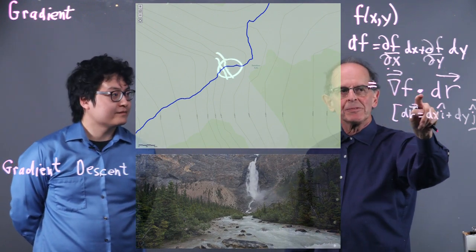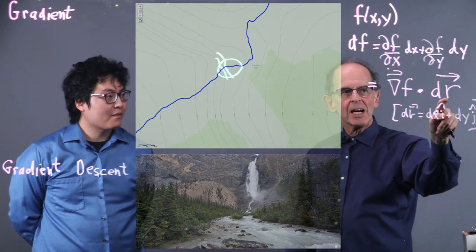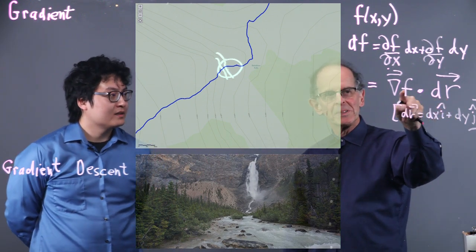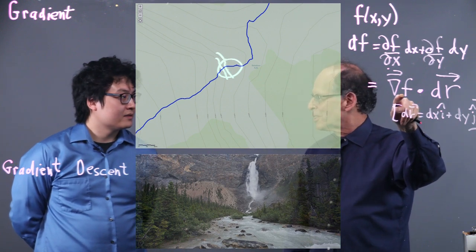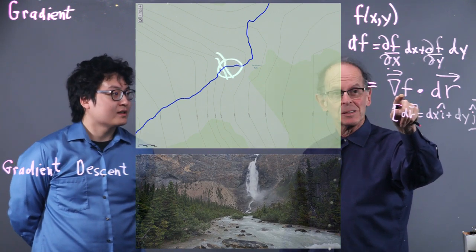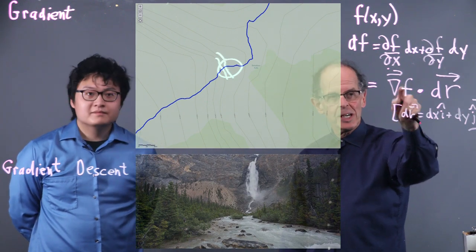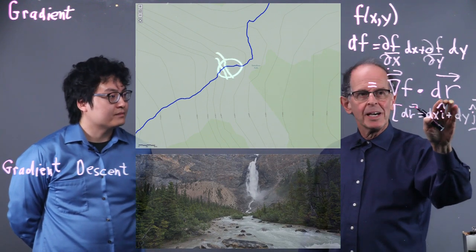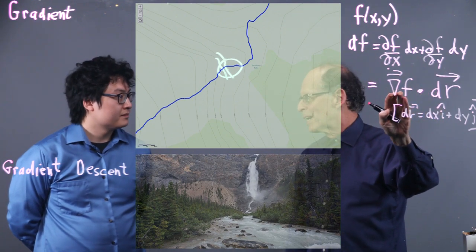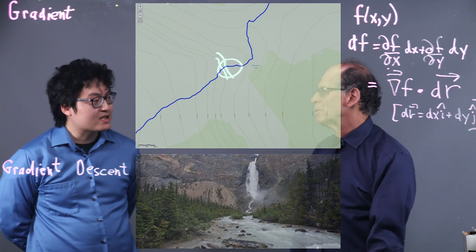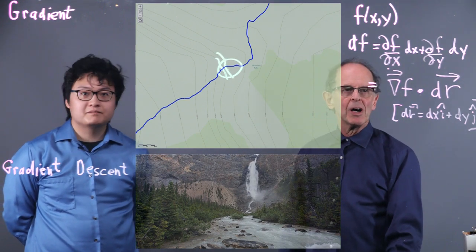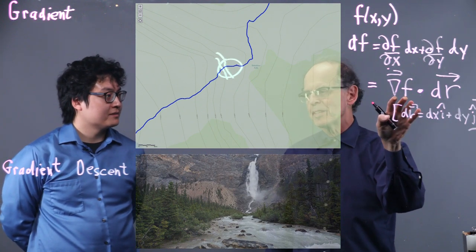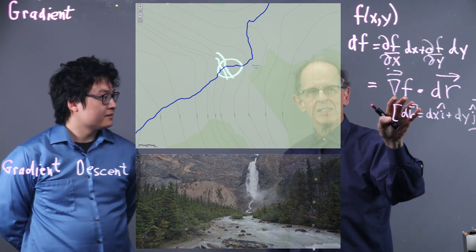DF equals gradient F dot DR. If DR is moving along a contour line that's perpendicular by our geographic analysis to the gradient, then it's zero. Your height doesn't change. So that means gradient F then would be perpendicular to DR. If DR is moving in the same direction as the gradient, we get the maximum decrease in the function F. So gradient F gives us the maximum rate. It's actually the way we've defined it as positive is ascent.